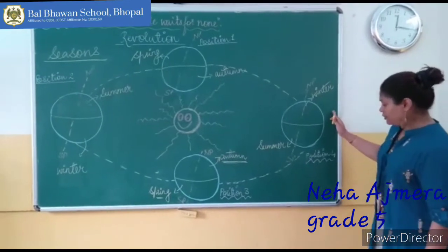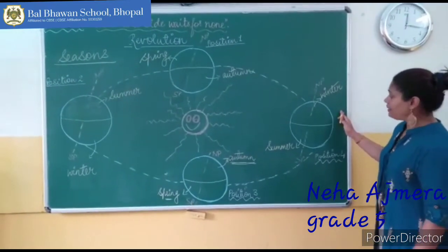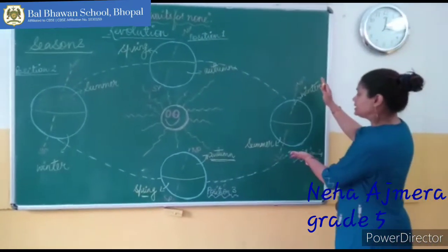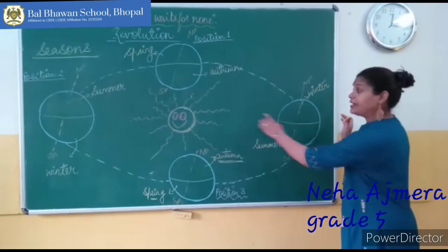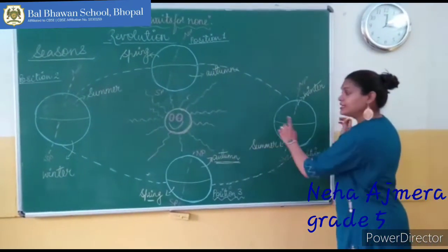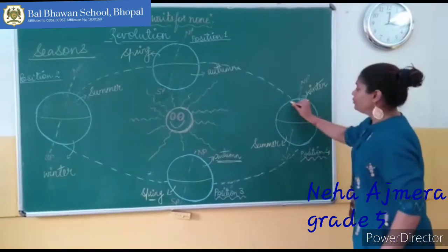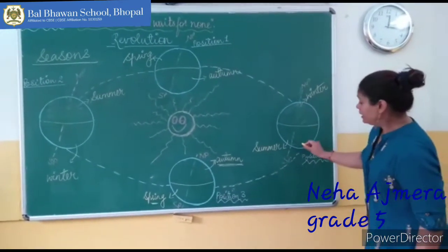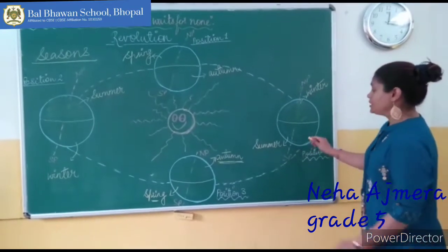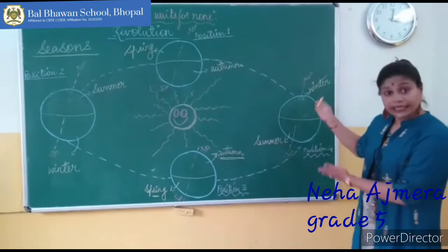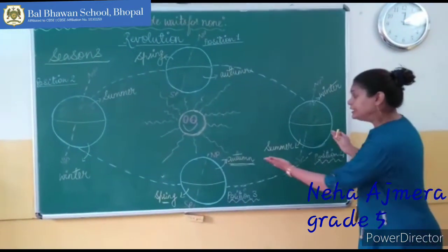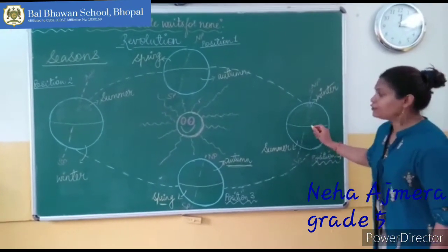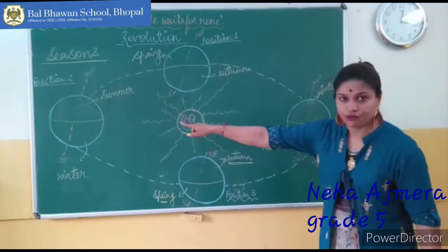Now in position number four, the north pole is tilted away from the sun and it is a little away. So here the northern hemisphere will experience winter, and the southern hemisphere, because of the tilt of the axis being a little near to the sun, will experience summer.